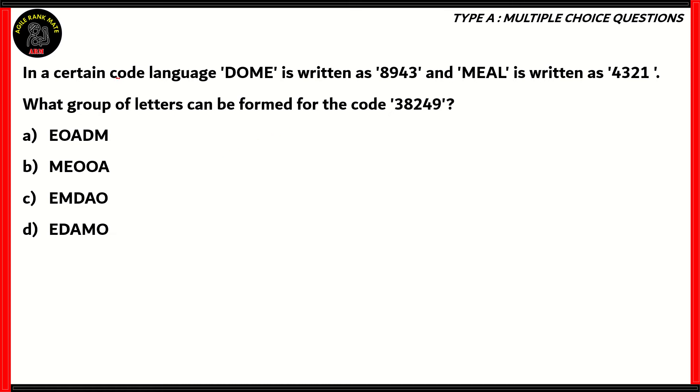Well, when it comes to coding and decoding, you'd always need to write the code along with the word it's represented. So, Dome is represented by 8943, and MEAL is represented by 4321. Now, if you look at the two words and their codes, you see that 4 and 3 are present corresponding to the position of the letters M and E respectively. So, M stands for 4, E stands for 3. Similarly, we can consider 8 as D, 9 as O, A as 2, and L as 1. In this kind of code, each letter is given a particular number.